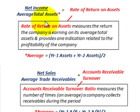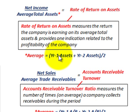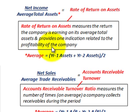What we mean by average total assets: we're given a balance sheet with year one and year two numbers for total assets. We take year one total assets plus year two total assets and divide by two — that gives us our average total assets.